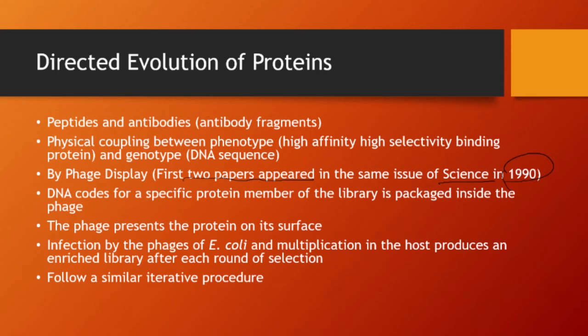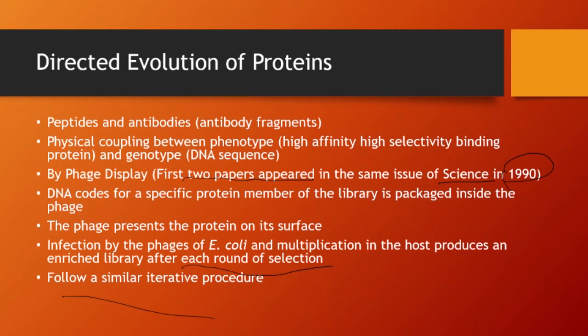Really, a DNA sequence codes for a specific protein, packaged into a phage, and the phage presents that protein on the surface. At the end of the day, you infect these phages into E. coli bacteria for multiplication. The cycles carry on with rounds of selections — students who have been doing research with me are very familiar with this term. It follows a similar iterative procedure. Let's look at it in a graphical way.